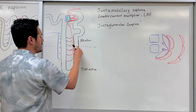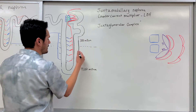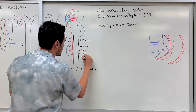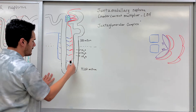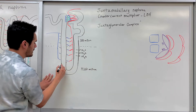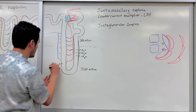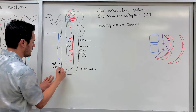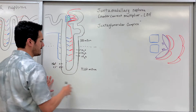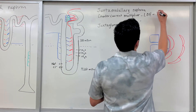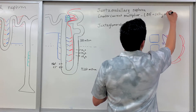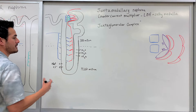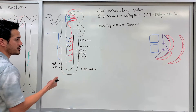The reason we call it the counter-current multiplier is because as fluid travels down the descending limb, water is what's leaving — through structures known as aquaporins. Then coming up through the ascending limb, this is where we pump out the salts — sodium and chloride. We're pumping these out in order to create a really salty medulla.